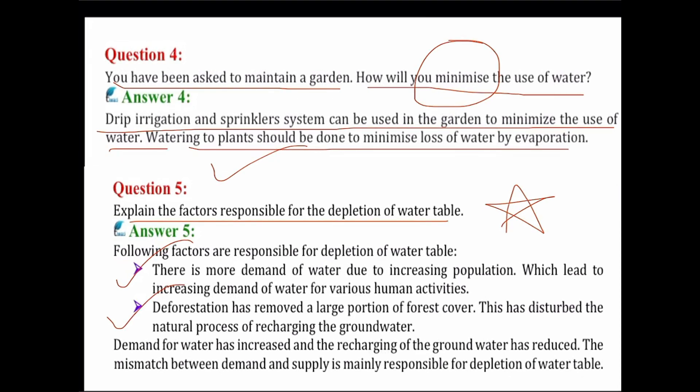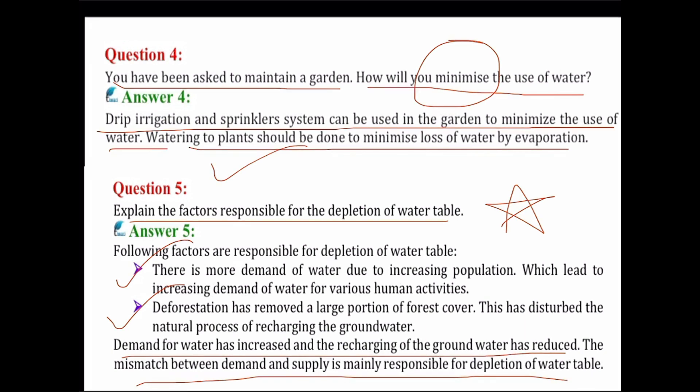Second point: deforestation has removed a large portion of forest cover, and this has disturbed the natural process of recharging the ground water. Continuously cutting trees increases the demand for water while reducing ground water recharge. The mismatch between demand and supply is mainly responsible for the depletion of water table.